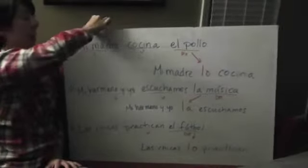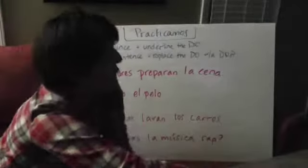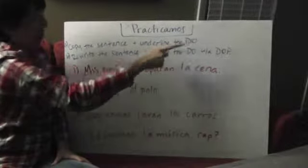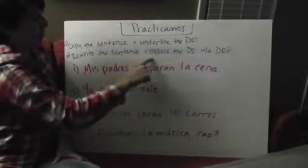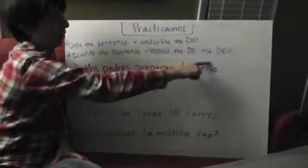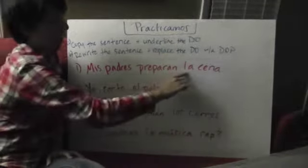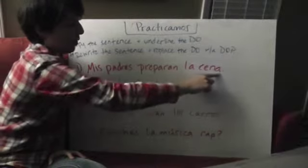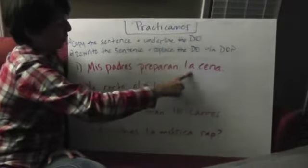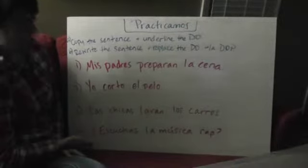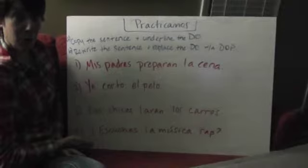Y ahora ustedes van a practicar. In your notes, you are going to copy the sentence and underline the direct object. Then you're going to rewrite the sentence and replace the direct object with a direct object pronoun. If we did one together: mis padres preparan la cena. What do they prepare? The dinner. La cena is what I would underline, and then I would replace it with la. When you rewrite it, you get mis padres la preparan. Complete el resto en su cuaderno. Y nos vemos pronto. Ciao, ciao.